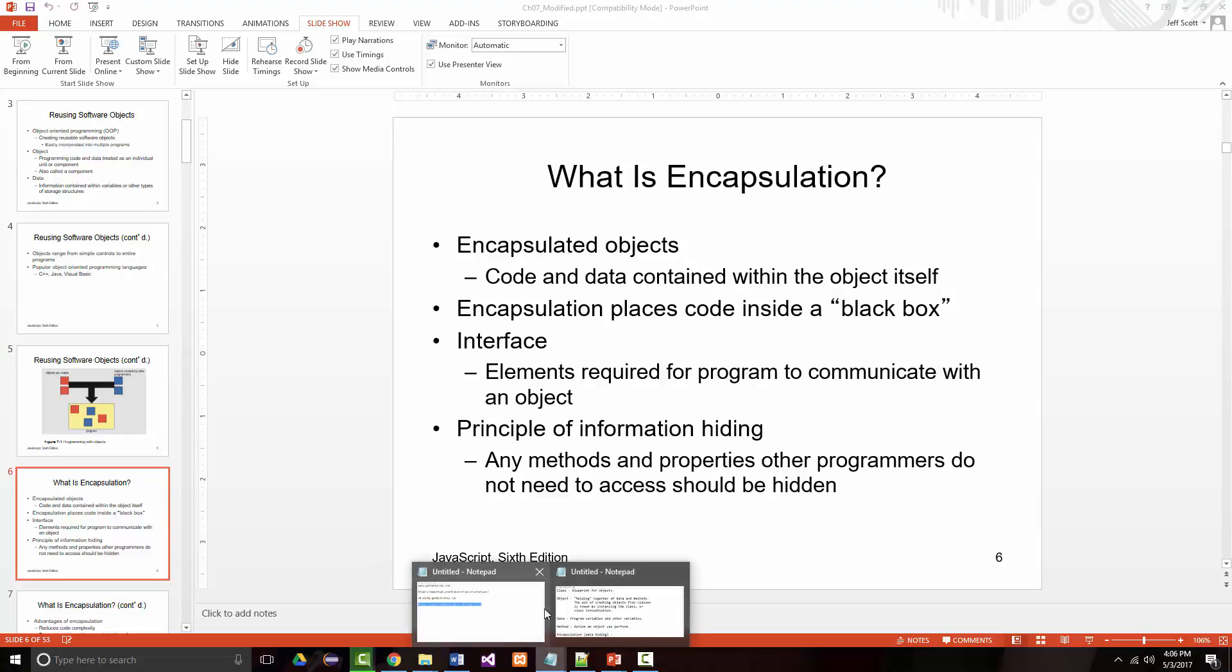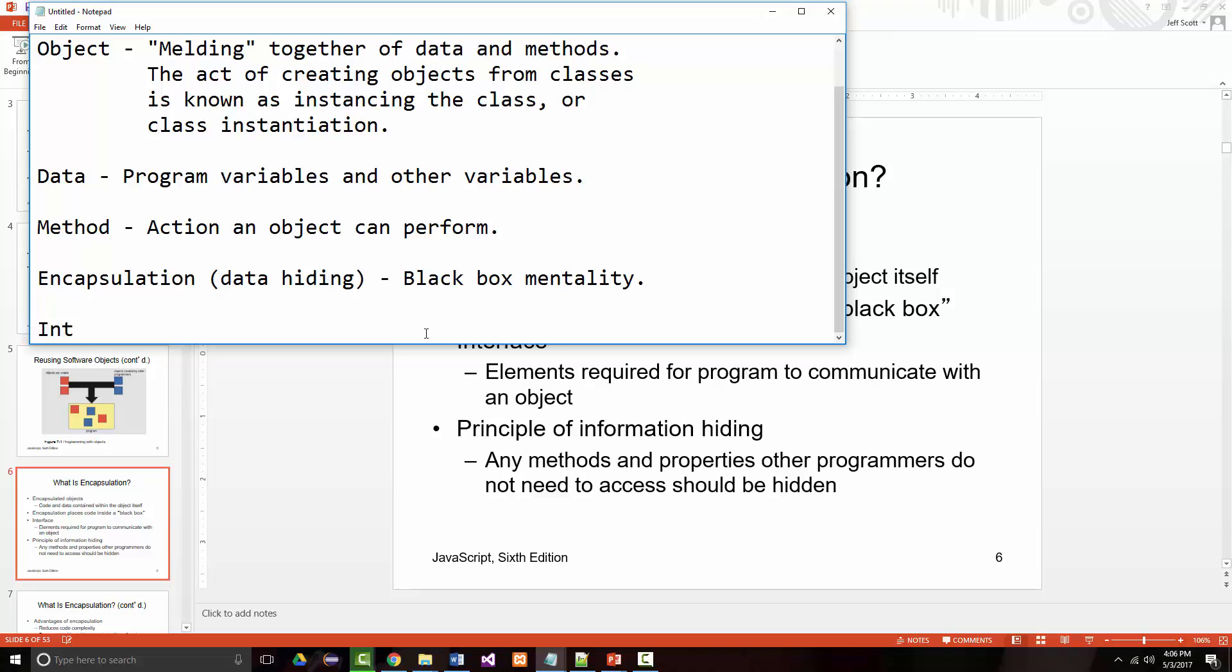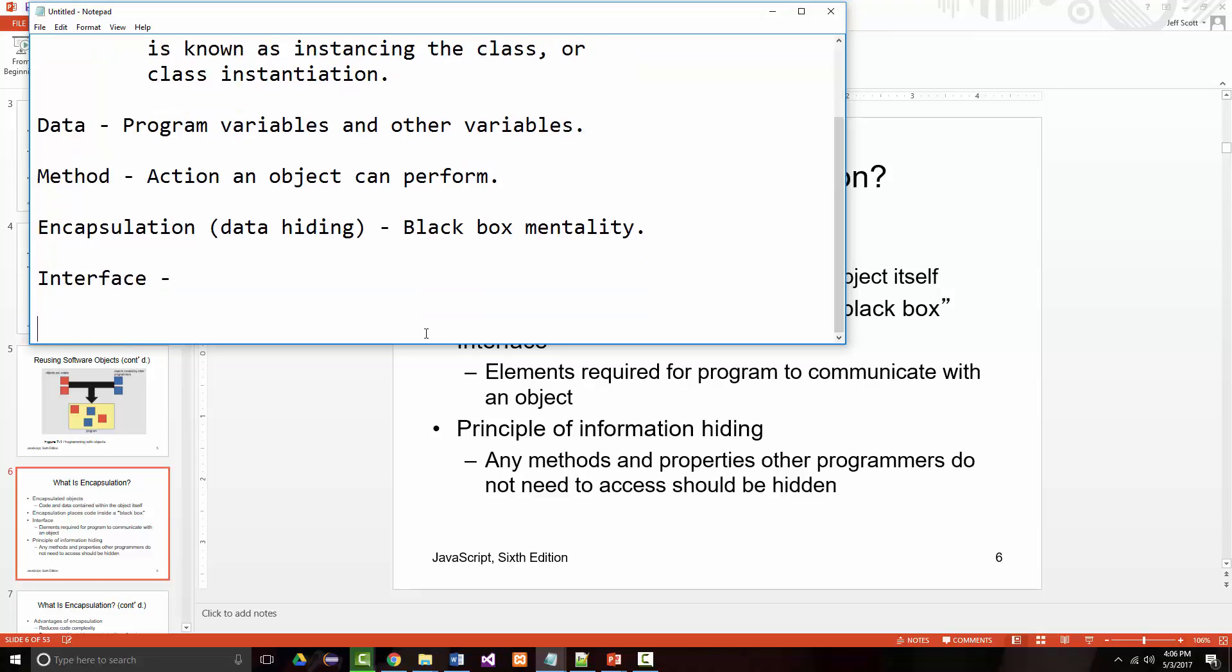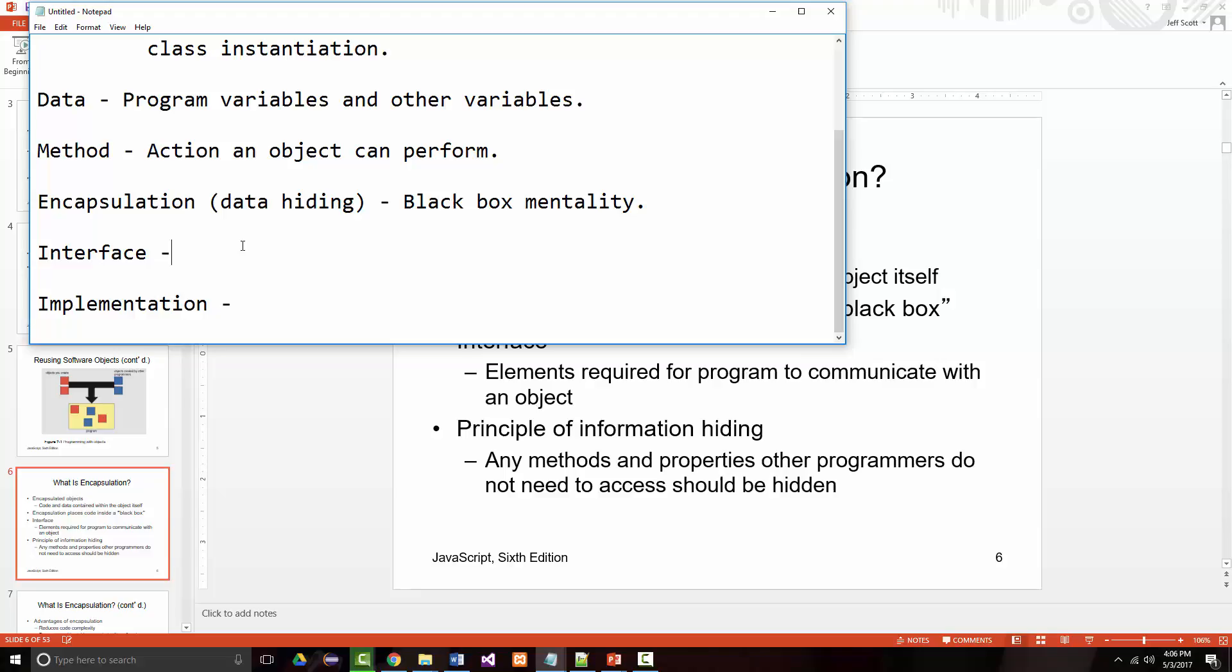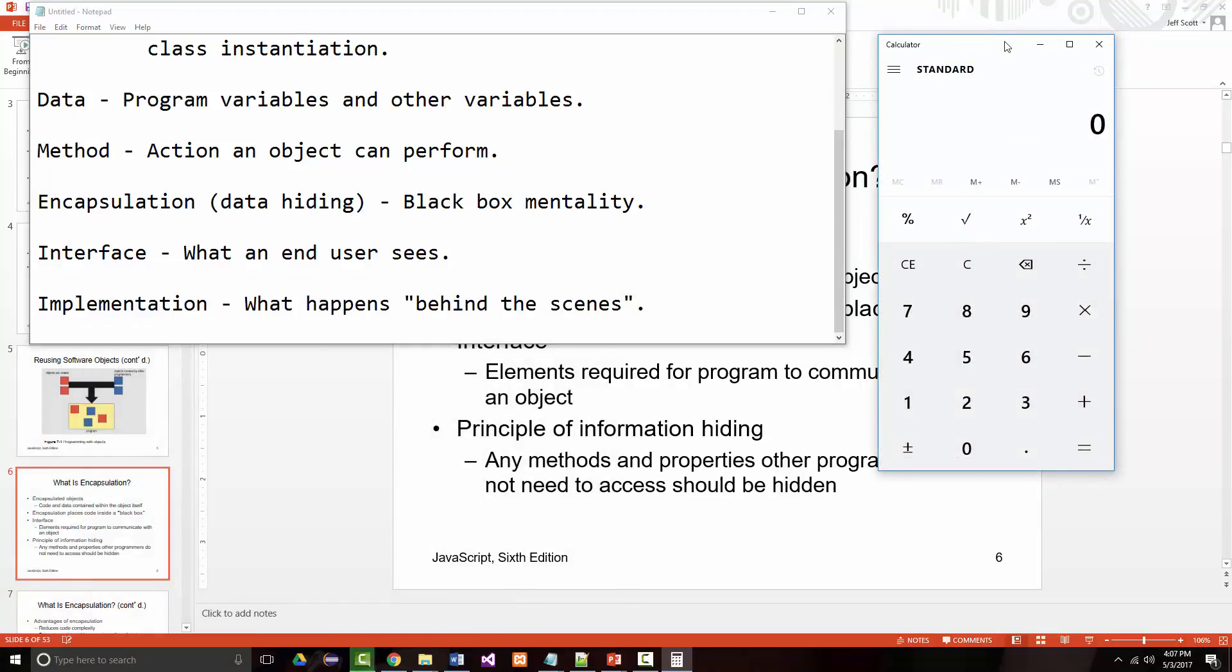That also gets you to talking about interface. Before we even talk about, so I just mentioned encapsulation, we'll call it black box mentality. But then I want to talk about interface. The interface is what an end user sees. And the implementation is what happens behind the scenes. And I can give you a real simple example right here. Here's a calculator. Here's a Windows calculator. This is the interface. This is what you see on the calculator.